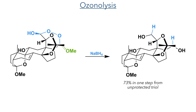When performing this sequence on the large scale, the authors carried out these steps in one pot, with the protection of the diol, the ozonolysis, and the reduction of the hydroperoxyacetal using sodium borohydride all occurring in one pot, which produced the product in a 73% yield.